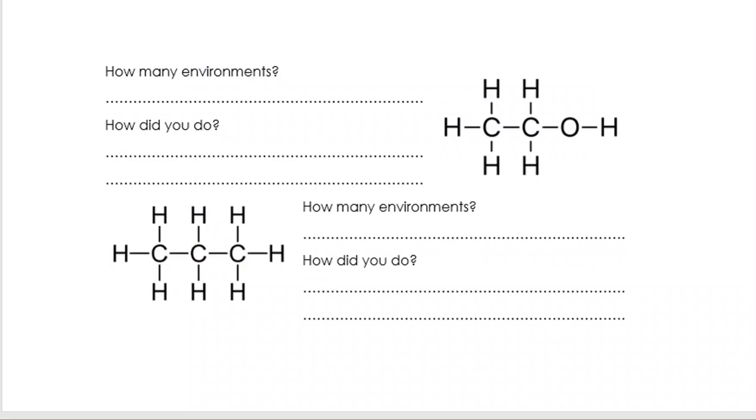On this one, I have got a carbon surrounded by three H's and a CH2OH. That's a different environment to this carbon which has two H's, a CH3 and an OH. So I have got two different environments there. On the one at the bottom, I definitely have a different environment here, but these carbons are in an identical environment - two environments, two peaks.